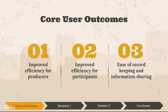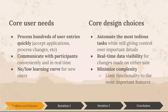Our core user outcomes are: first, improved efficiency for producers; second, improved efficiency for participants; and third, ease of record keeping and information sharing. On the left hand side you see the needs that we identified for users — to process hundreds of user entries very quickly, for admin to communicate with participants conveniently and in real time, and a low learning curve for new users.